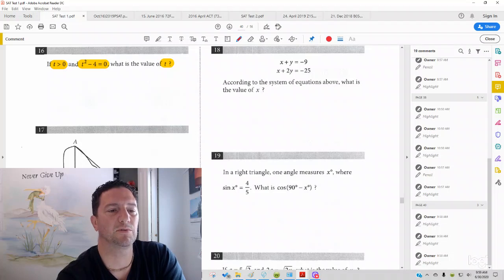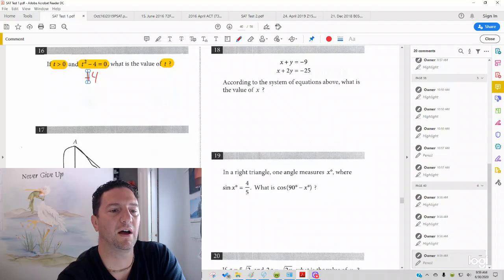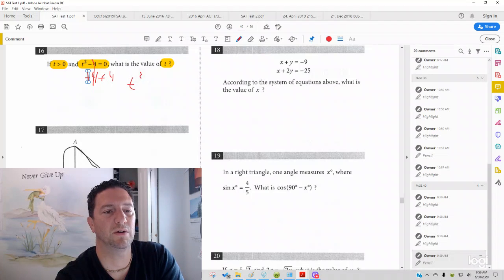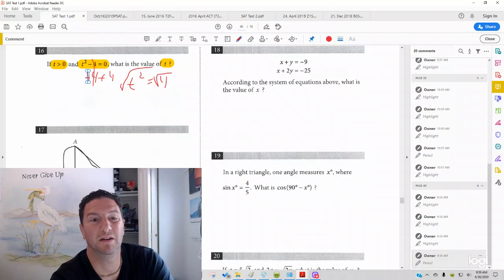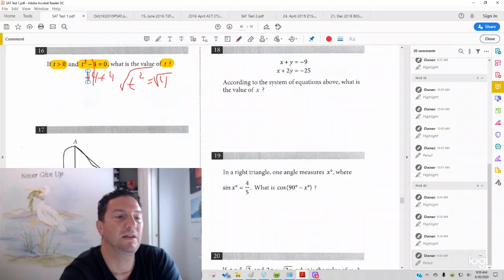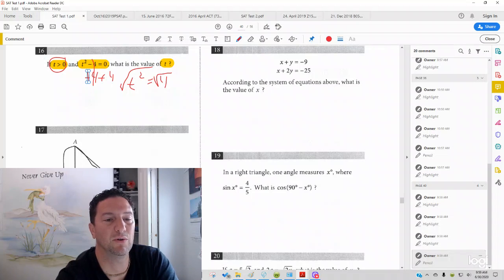But let's do it like an algebra problem. First thing you'd do is add four to both sides. And over here, you'd cancel, and you'd get t² = 4. Now, taking the square root of both sides, really here, you'd get t = ±2. Because if t is two, 2² is four. If t is negative two, negative two times itself is going to give you a positive. But keep in mind that it says t has to be greater than zero, so t equals two.